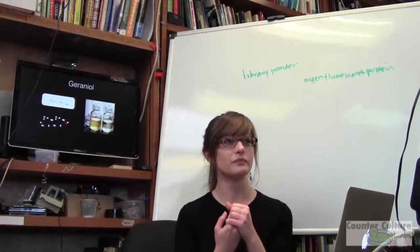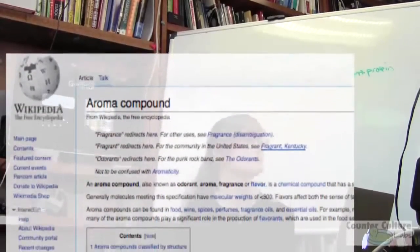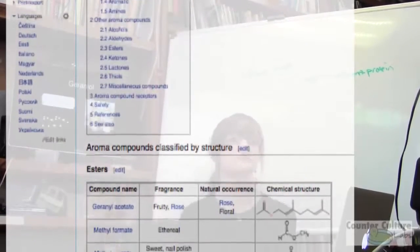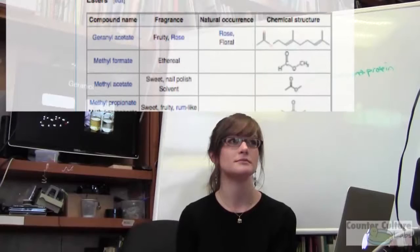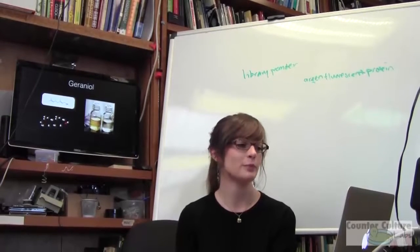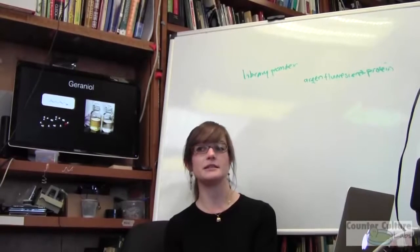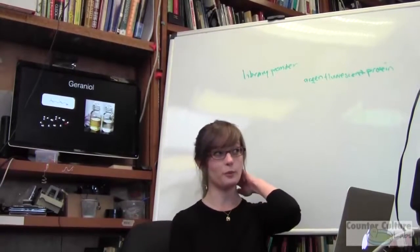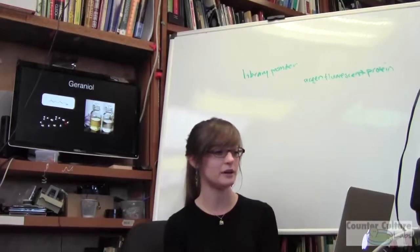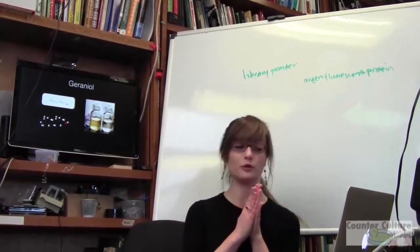The Wikipedia page is under 'Aroma Compound.' They've got a long list classified under esters, linear terpenes, cyclic terpenes. For each compound they say what it smells like, link to the Wikipedia page on that chemical, and show the chemical structure. It's a really nice starting point. I want to make geranial — that's one of the molecules responsible for the floral scent.